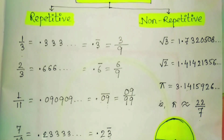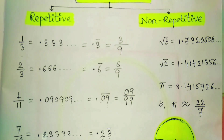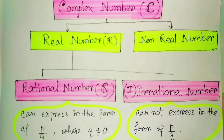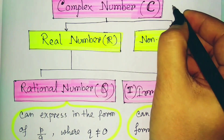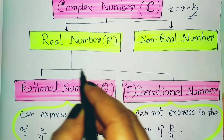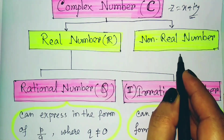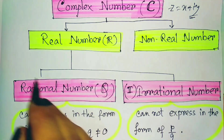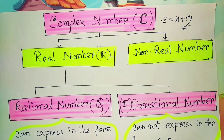So non-repetitive numbers are irrational numbers, and all repetitive numbers and integers are part of the rational numbers. To summarize the entire number system: complex numbers are the broadest category. A complex number can be expressed as x + iy. When the iy term is zero, it becomes a real number. Non-real numbers are also part of complex numbers.